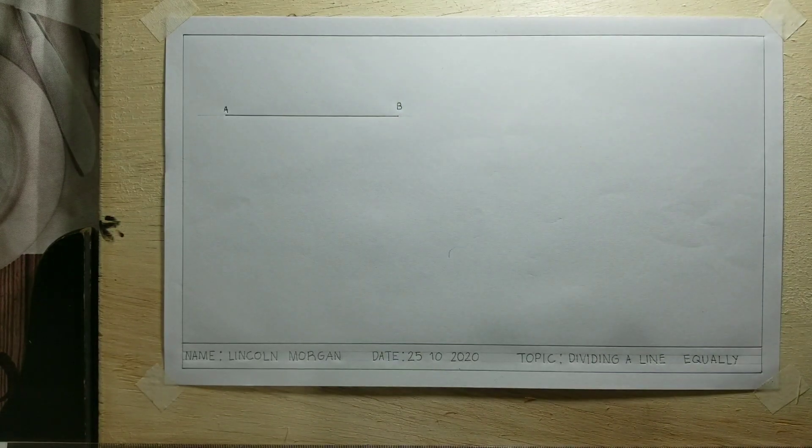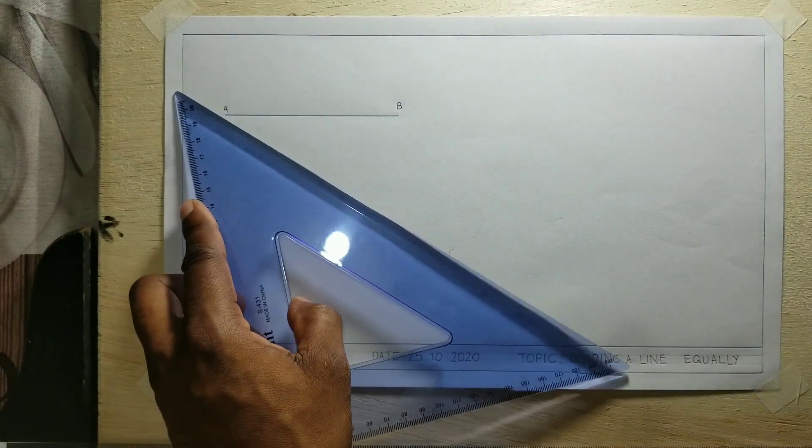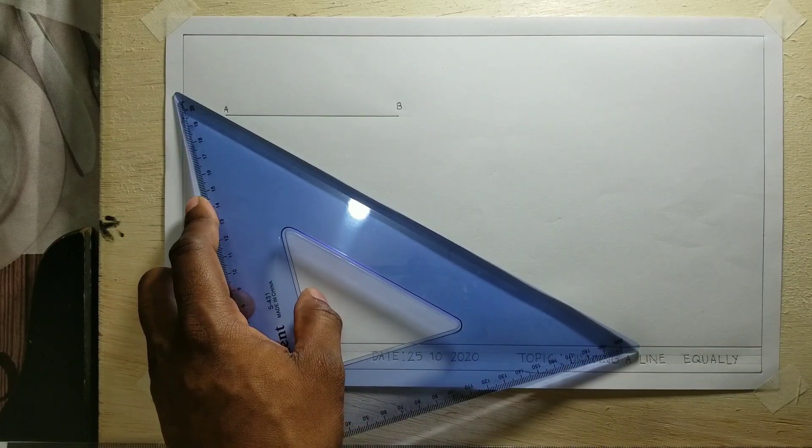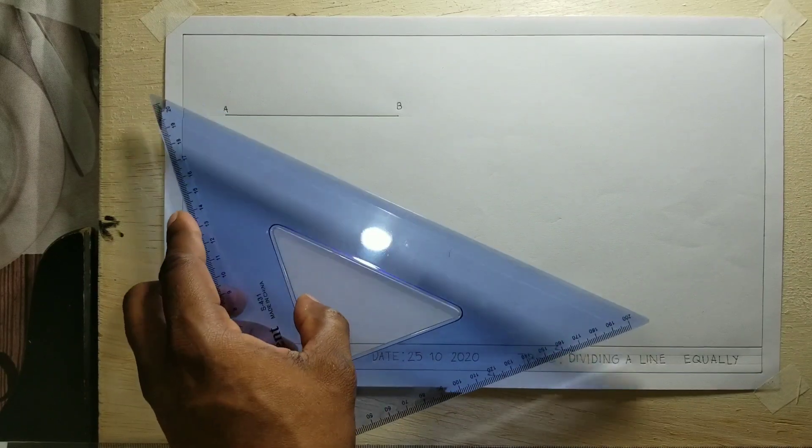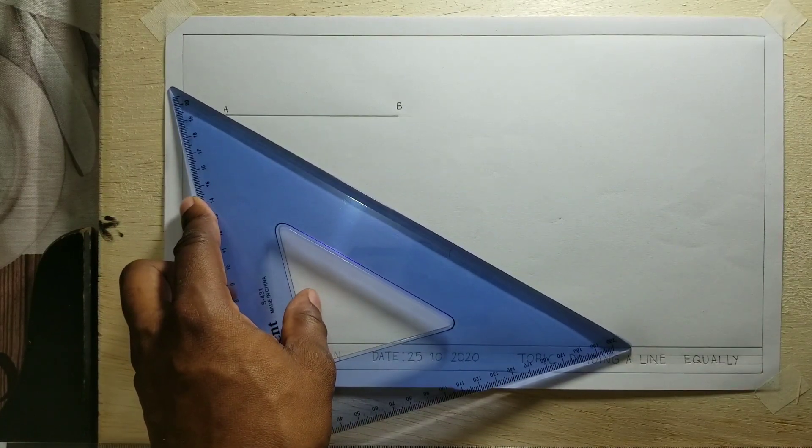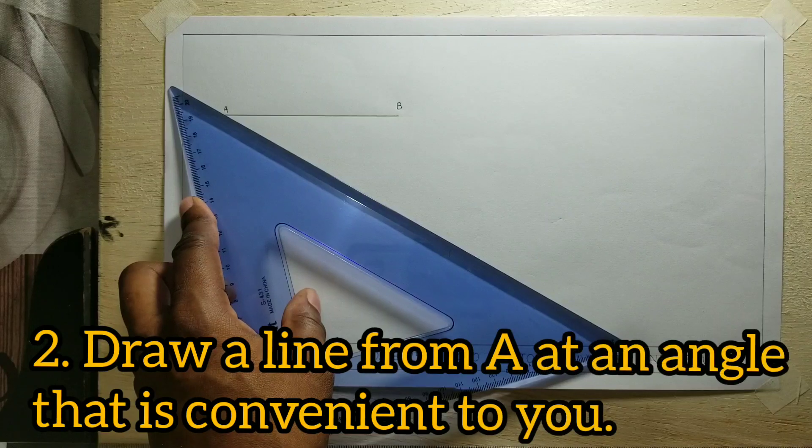Now I'll be drawing a line from A at an angle, an angle that is convenient to me. So you should also draw a line at an angle that is convenient to you. I will now draw this construction line.